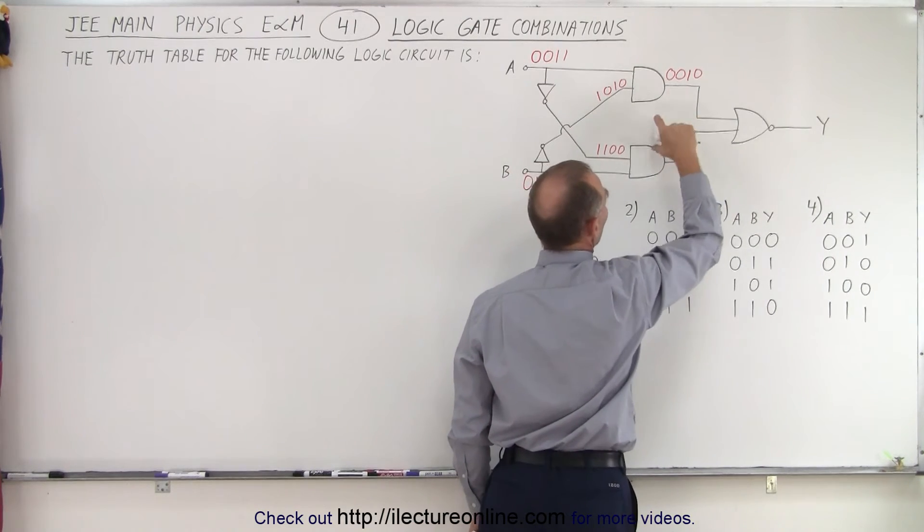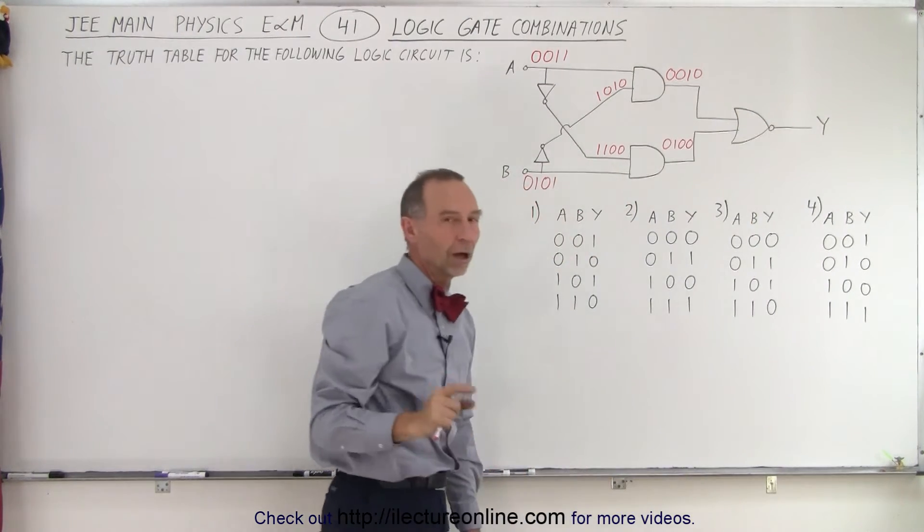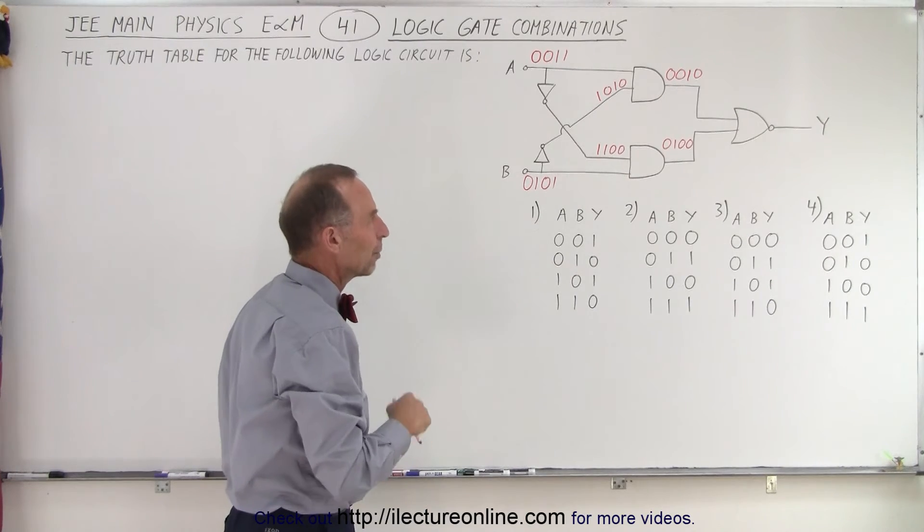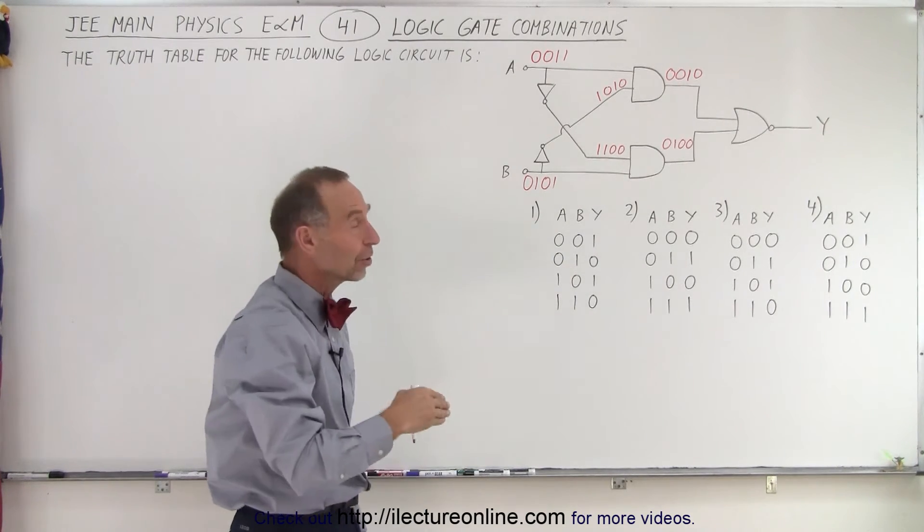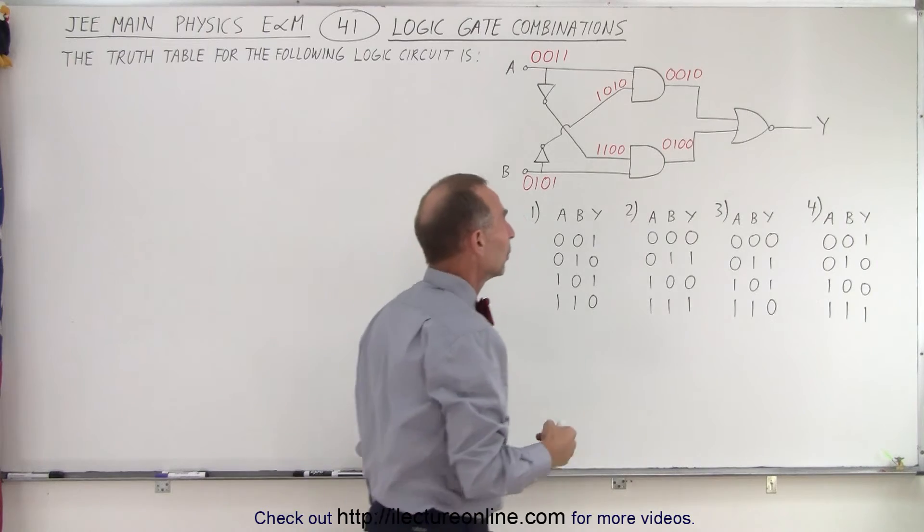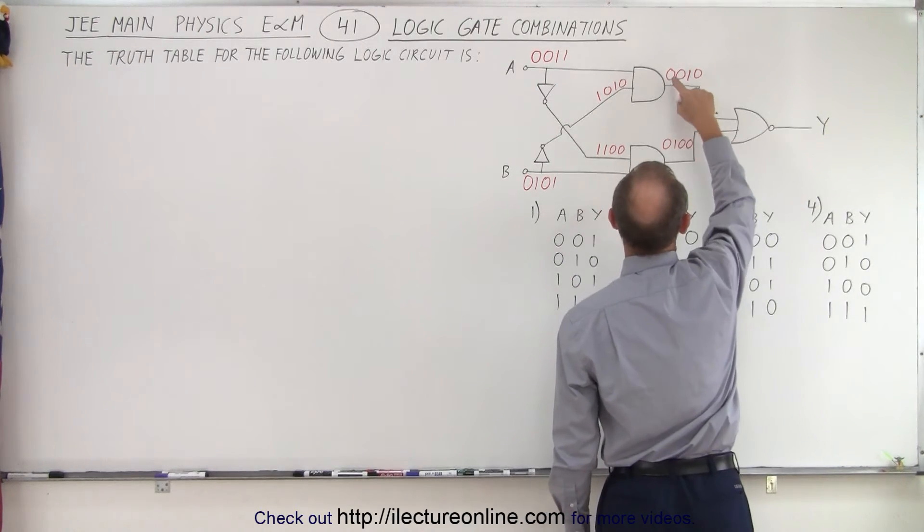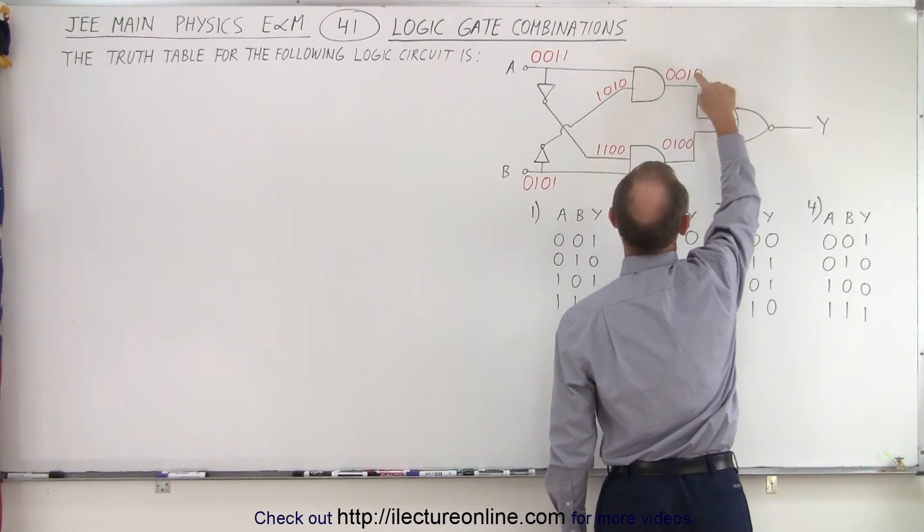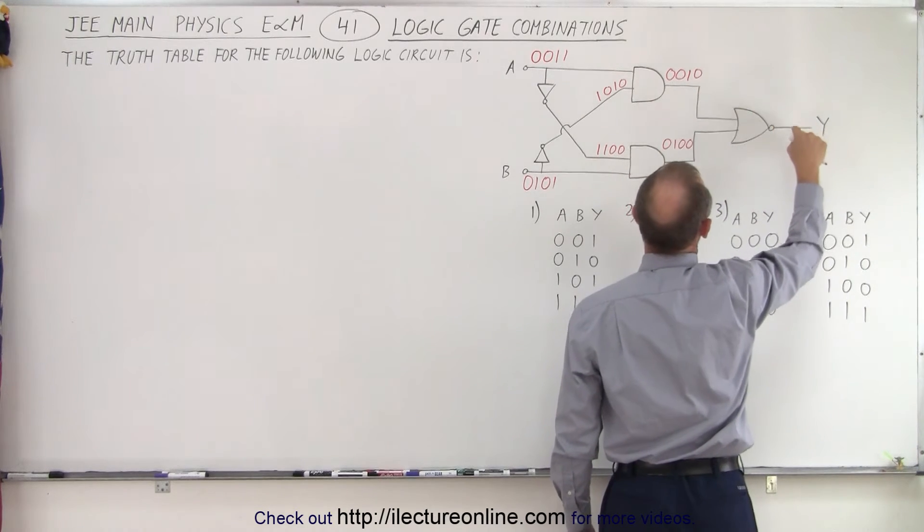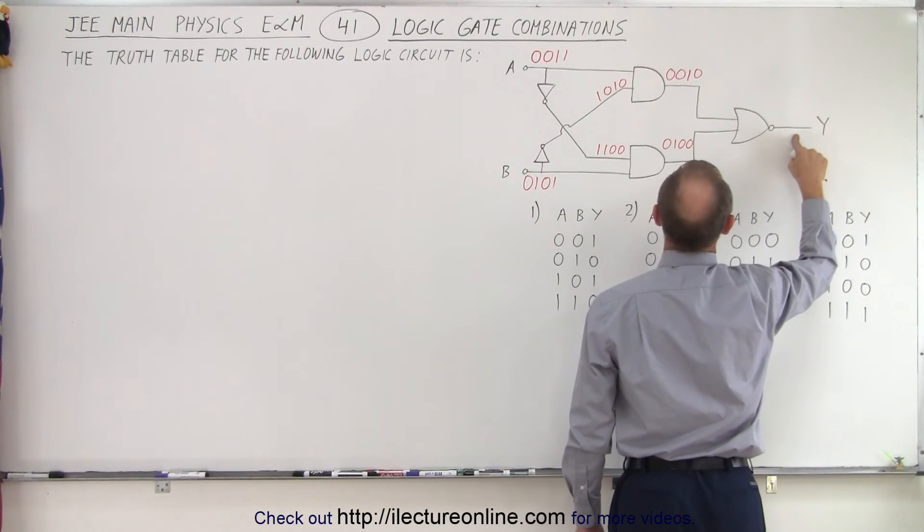So now we have the two outputs which are now the two inputs of the NOR gate. Now remember a NOR gate is the opposite of the OR gate. If it's an OR gate then all you have to have is one of the inputs to be a 1, and you'll get a 1 over here.